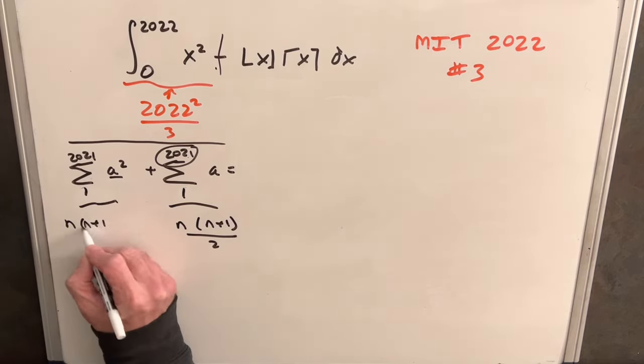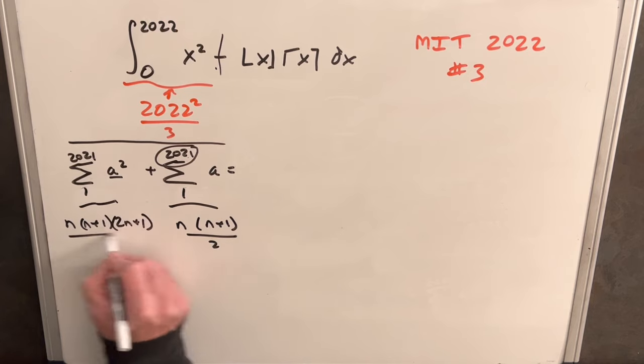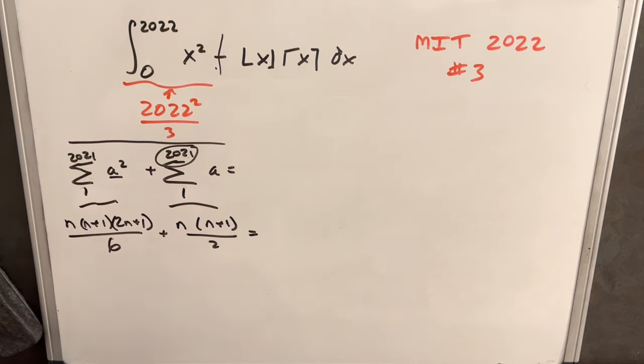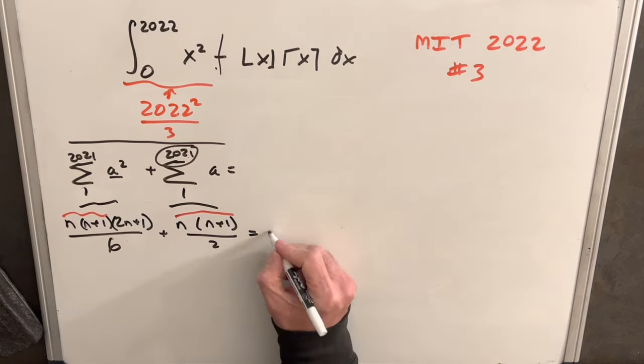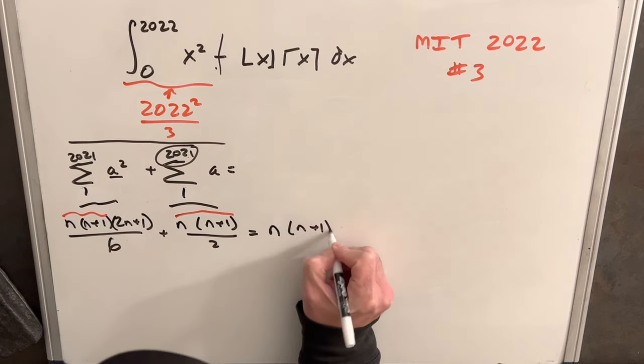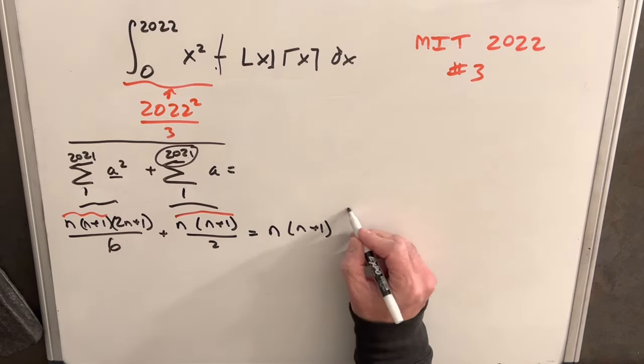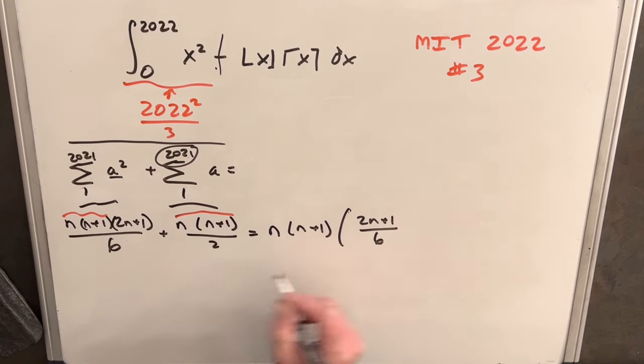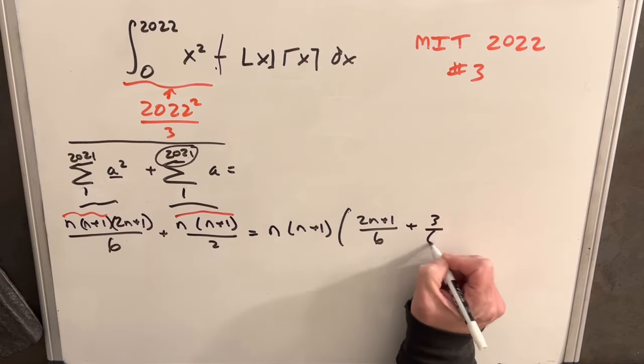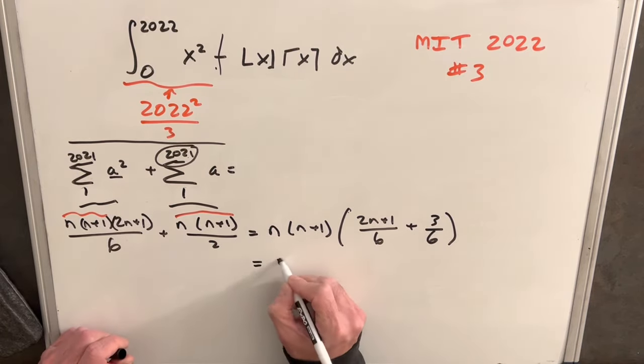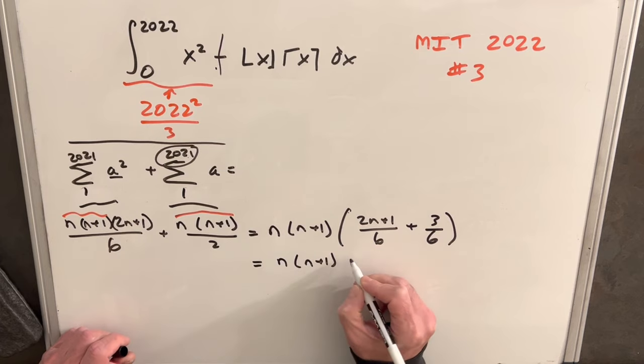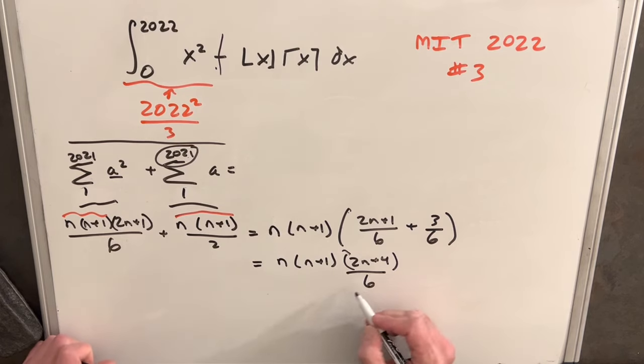This formula is going to be n times n plus 1 over 2, with n being our 2021 value. For the squared term, it's n times n plus 1 times 2n plus 1 all over 6. We have n times n plus 1 in common in both, so we can factor that out. We'll have 2n plus 1 over 6, and here instead of a half, let's write 3 over 6. This is n times n plus 1, 2n plus 4 over 6.